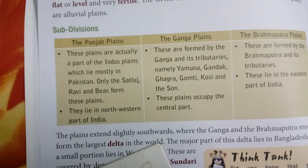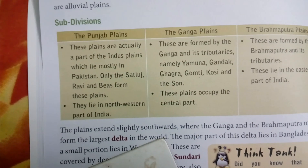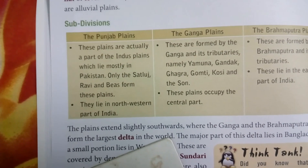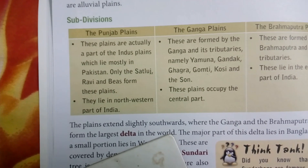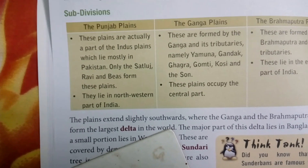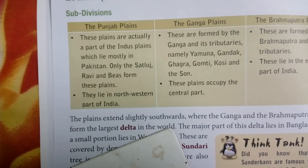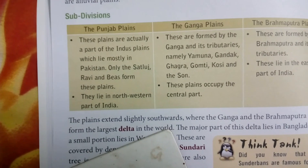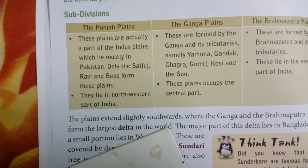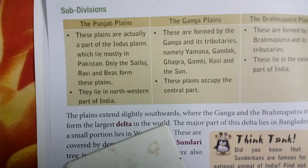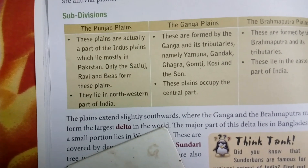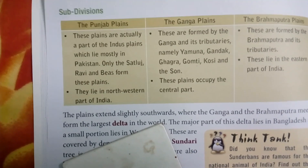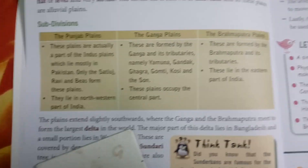The Punjab Plains are actually a part of the Indus plains, which lies mostly in Pakistan. Only the rivers Sutlej, Ravi and Beas form these plains in the north-western part of India.